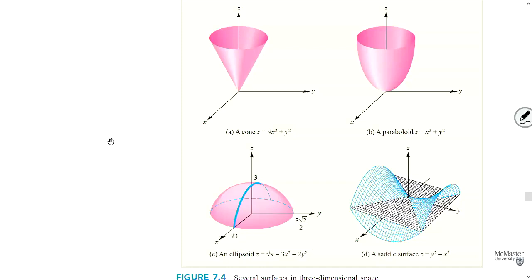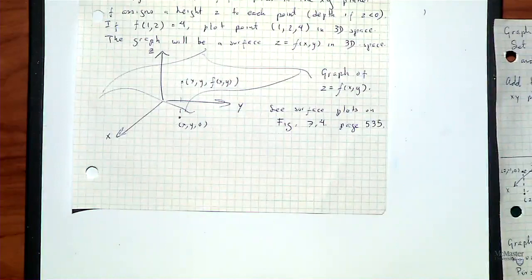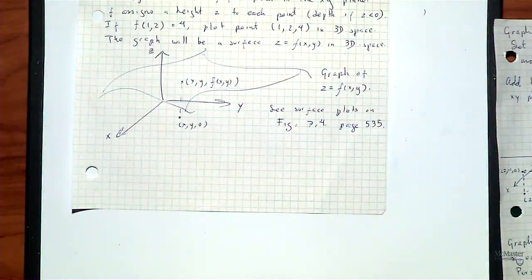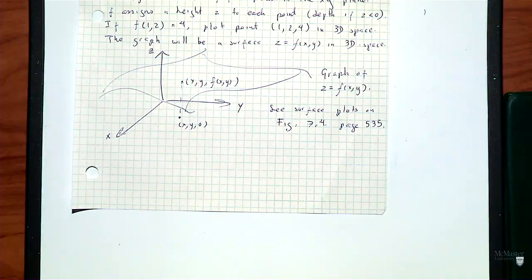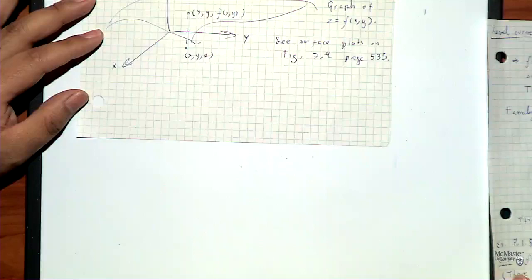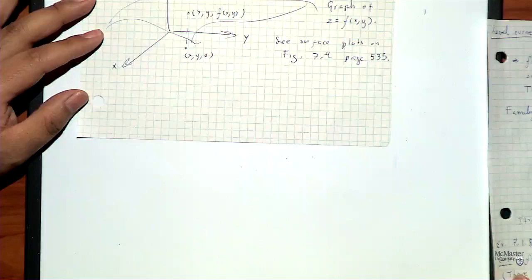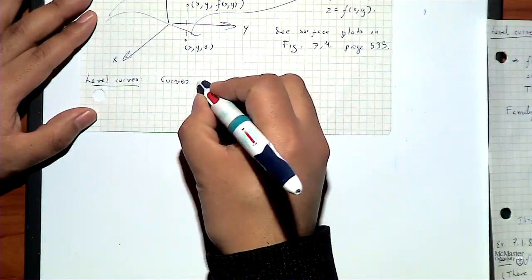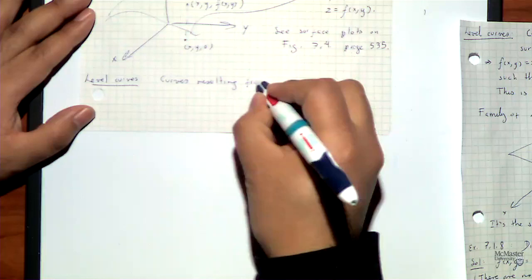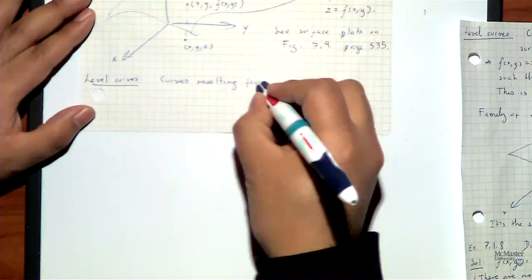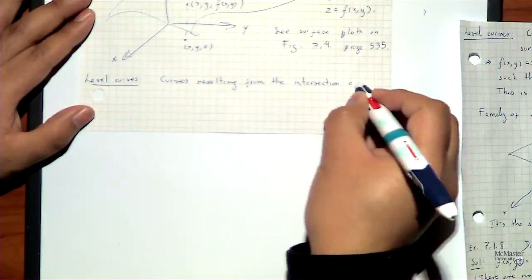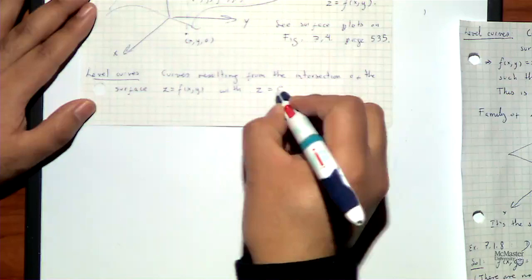Let me go back to the doc cam. There is a second concept called a level curve. Level curves are curves resulting from the intersection of the surface Z equal to f(x, y) with a horizontal plane Z equal to a constant C.